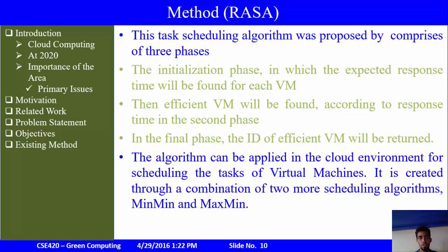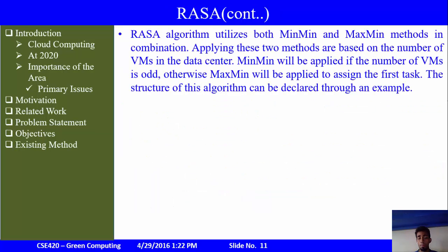Moving on to the first scheduling algorithm: RASA. This is a task scheduling algorithm proposed in three phases. First, the initialization phase, in which the expected response time is found for each virtual machine. Then, the efficient virtual machine is found according to the response time in the second phase. In the final phase, the identification ID of the efficient virtual machine is returned.